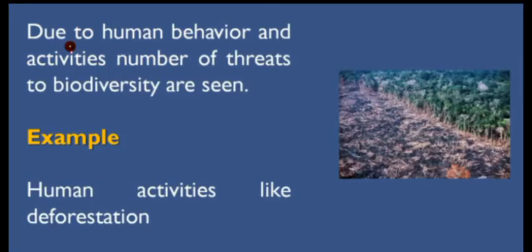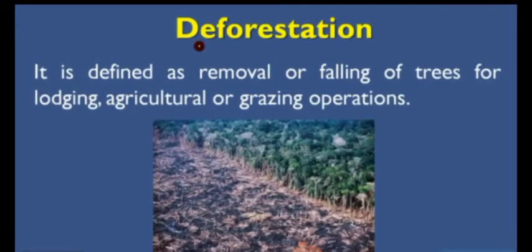Due to human behavior and activities, there are many threats to biodiversity. The first one is deforestation. Deforestation is defined as the removal or felling of trees for logging, agricultural, and grazing operations — essentially, cutting of trees such that a place becomes devoid of trees.